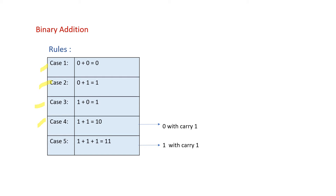1 + 1 in decimal is 2, and 2 in binary is 10. For case 5, 1 + 1 + 1 gives 11, because in decimal 1 + 1 + 1 = 3 and 3 in binary is 11. This is written as 1 with a carry of 1.